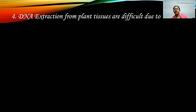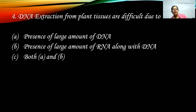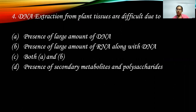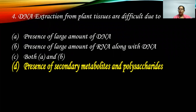Next: DNA extraction from plant tissues is difficult due to — large amount of DNA? No. Large amount of RNA along with DNA? That doesn't make sense. Presence of secondary metabolites and polysaccharides? Yes. Because of secondary metabolites and polysaccharides, the phenolic content increases. Even when extraction appears successful and readings are high, running the gel gives a smear instead of a distinct genomic DNA band. These metabolites interfere with DNA extraction. The answer is presence of secondary metabolites and polysaccharides.